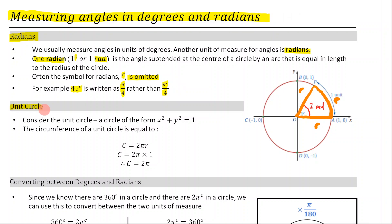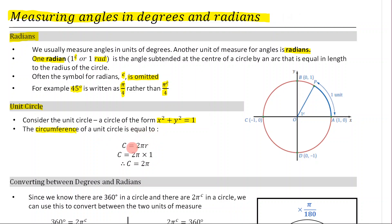The next thing we're going to talk about is the unit circle, which we're going to be seeing a lot of. The unit circle is a circle with a radius of one, of the form x² + y² = 1. The circumference of the unit circle is 2πr, and since the radius is one, the circumference is 2π.